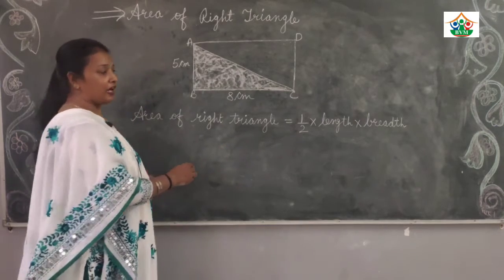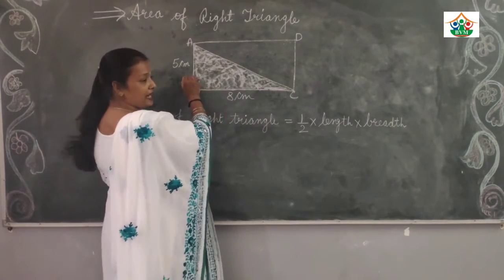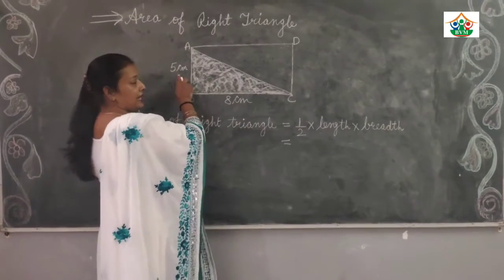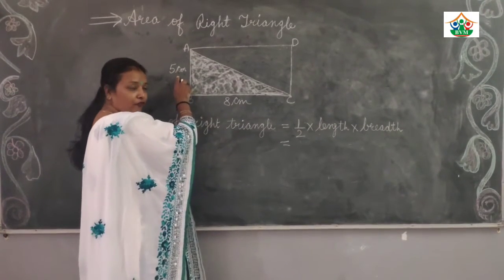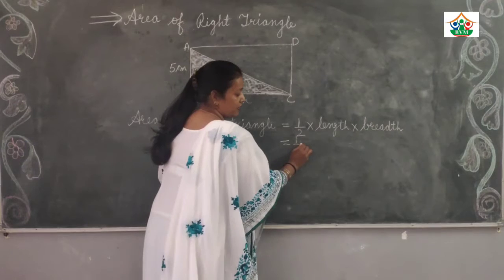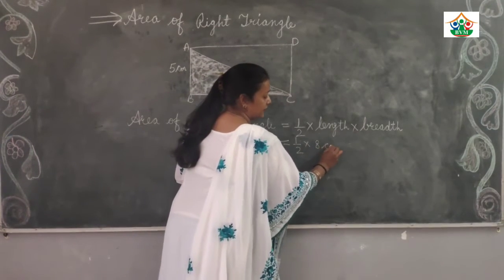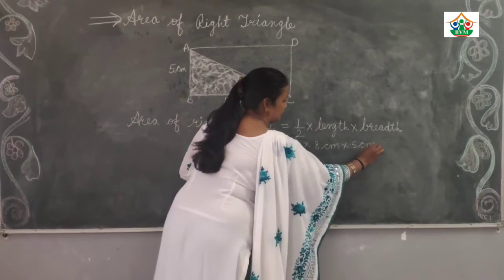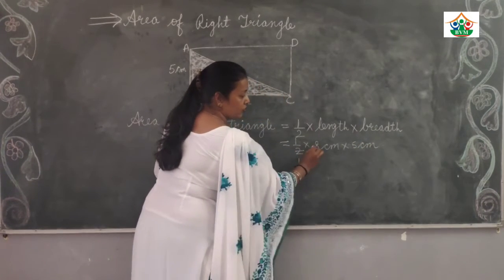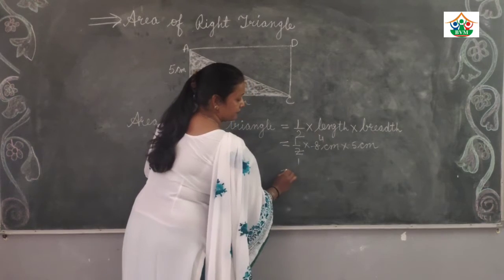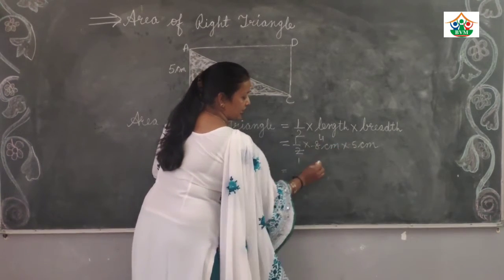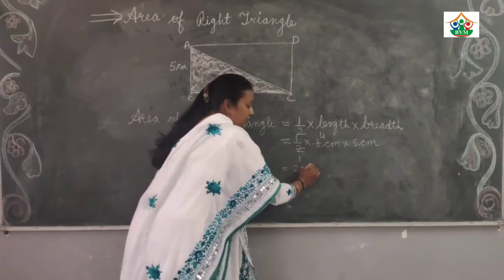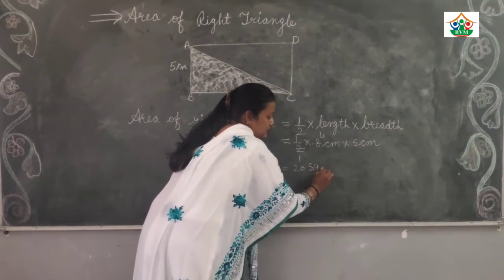Now we will put the value of length and breadth. Length is equal to 8 centimeters and breadth is equal to 5 centimeters. 1 over 2 multiply 8 centimeters multiply 5 centimeters. 2 ones are 2, 2 fours are 8, so 4 multiply 5 is equal to 20 square centimeters.